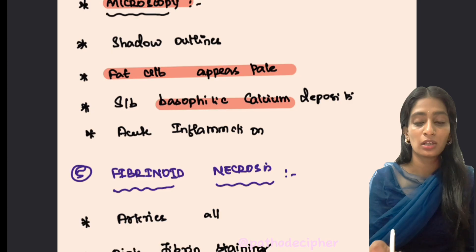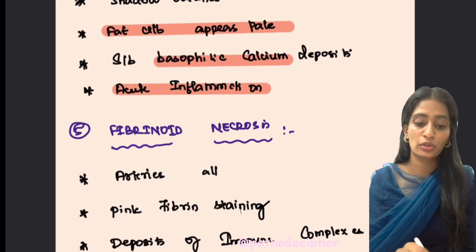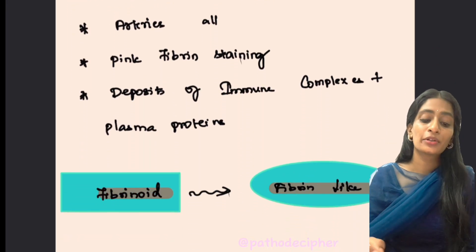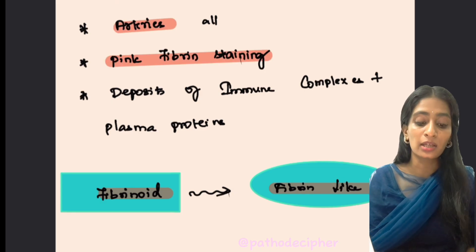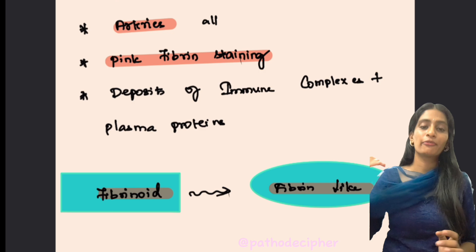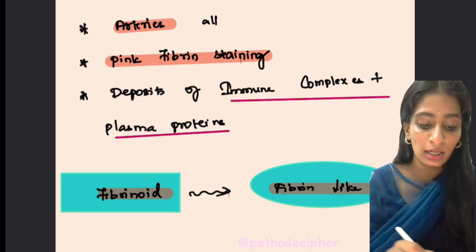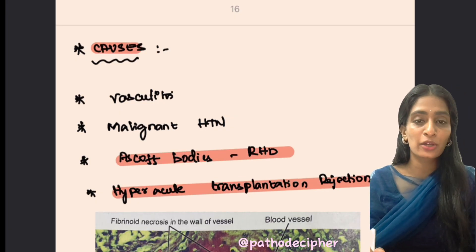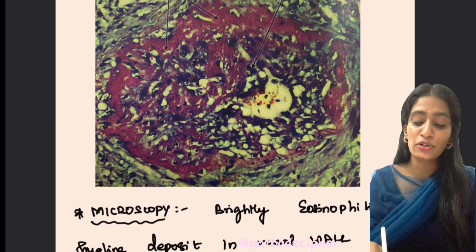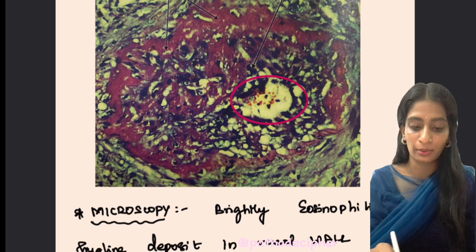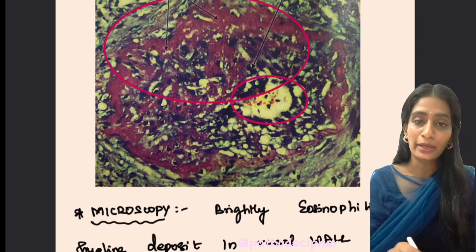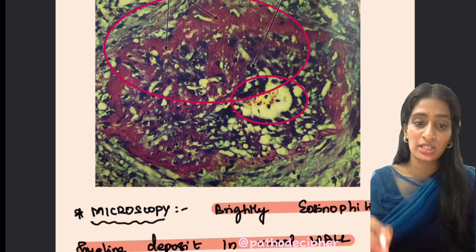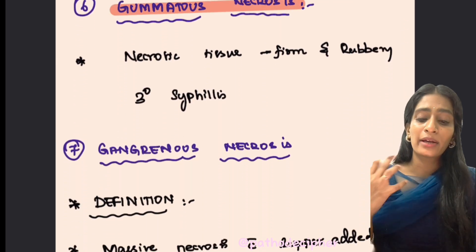Microscopically in fat necrosis, there are shadow outlines with pale-looking fat cells, basophilic calcium deposits, and acute inflammation. Fibrinoid necrosis occurs in arterial walls, where it appears as pink fibrin-like staining — composed of immune complexes and proteins. Causes include vasculitis, malignant hypertension, Aschoff bodies in rheumatic heart disease, and hyperacute transplantation rejection. Microscopically it shows brightly eosinophilic hyaline deposits in the vessel wall; the classic stain is PTAH.